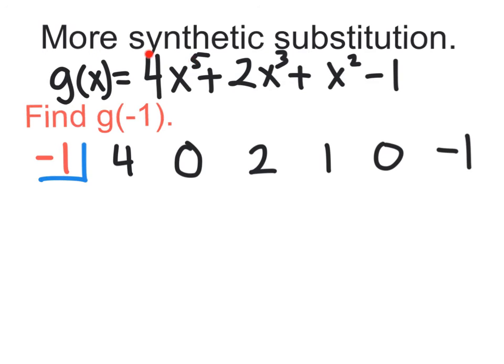Once again, power of 5 has a 4 in front. That's why the first coefficient is 4. There is no power of 4, so you have to represent it with a 0. There is a power of 3. There's a 2 right there in front. There is a power of 2. There's a 1 right there in the front. There is no x, so you're going to put a 0 for the x. And the constant is negative 1. Now, of course, we're going to do this easy pattern.